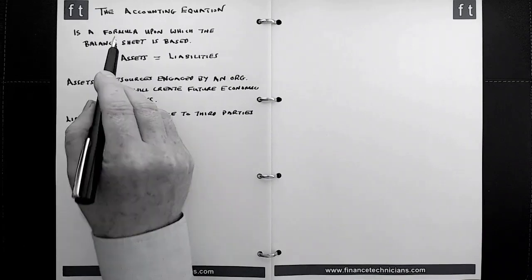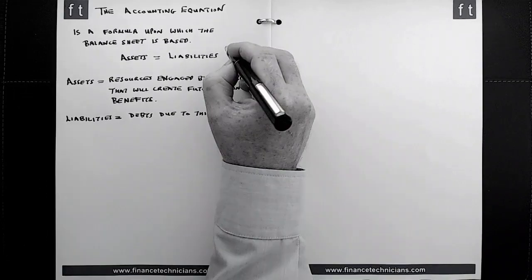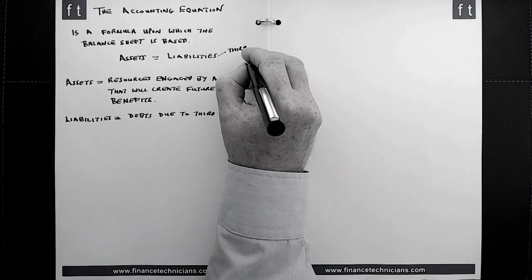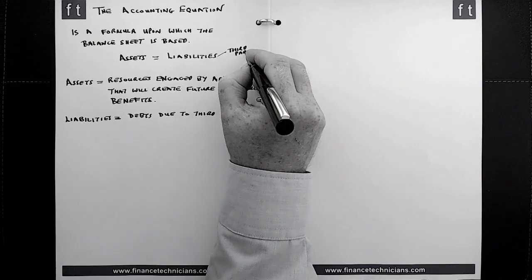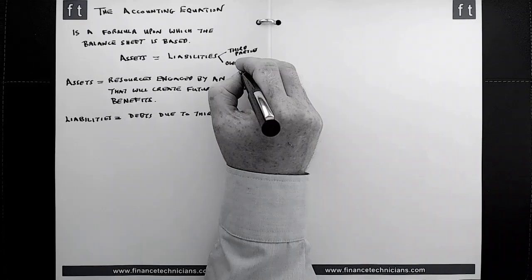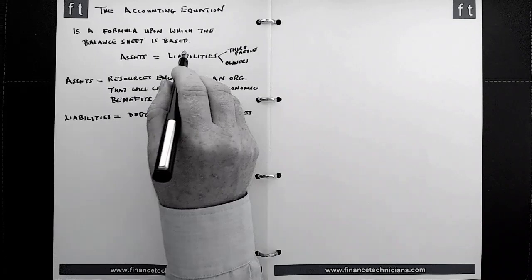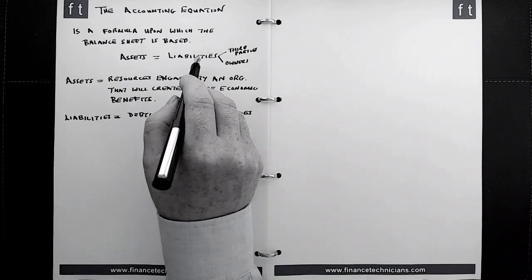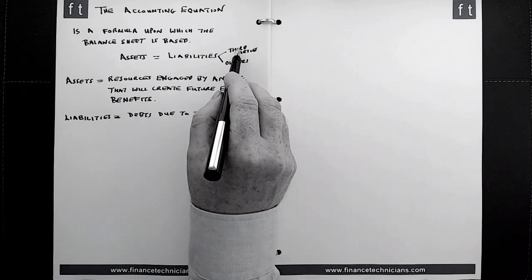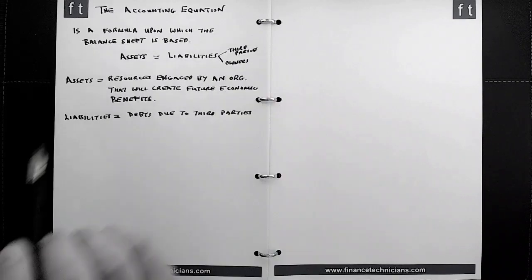In relation to the formula, the liabilities can be split into two aspects. They can be split into third parties who are not owners and also owners of the business. So money's owed to the owners of the business. We need to be aware of this when we look at a business, and we will see a breakdown of the balance sheet whereby third parties are separated from the owner's equity of the business.